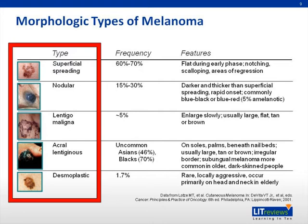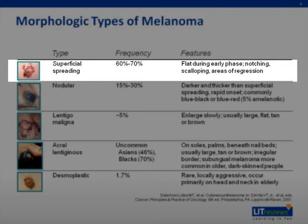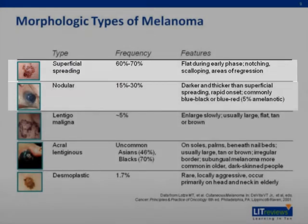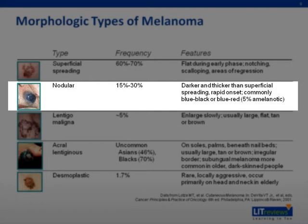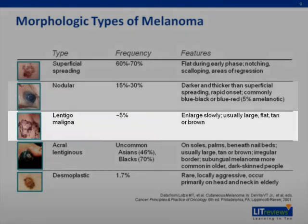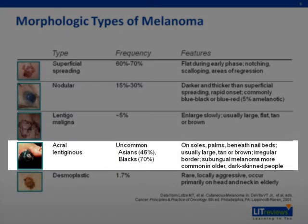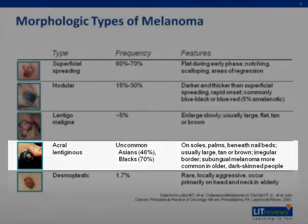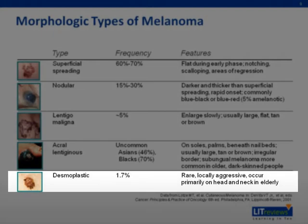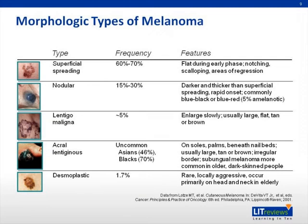There are generally five types of melanoma. Superficial spreading is the most common. Nodular is an aggressive type that has a vertical growth phase early in oncogenesis, and as a result, these lesions are often thicker. Lentigo maligna is a flat, less aggressive type. Acrolentiginous melanoma is frequently found on the palms or soles of darker skinned people. And desmoplastic is a rare but aggressive form. This slide lists in table form these types of melanoma along with their frequencies and characteristic features.